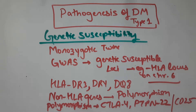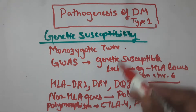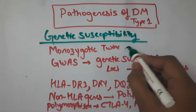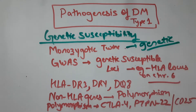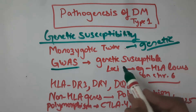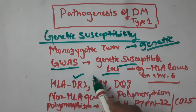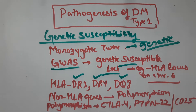Starting with genetic susceptibility — how did we reach this conclusion? First, studies of monozygotic twins found a higher concordance, indicating a genetic basis for Type 1 diabetes mellitus. Second, genome-wide association studies identified multiple genetic susceptibility loci, such as the HLA locus on chromosome number 6. They identified HLA DR3, DR4, and DQ8 haplotypes, which demonstrate an inherited risk in Type 1 diabetes mellitus.